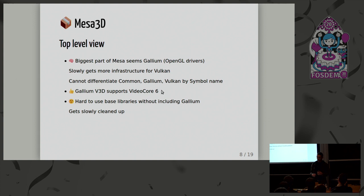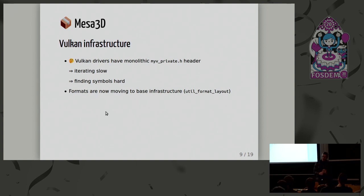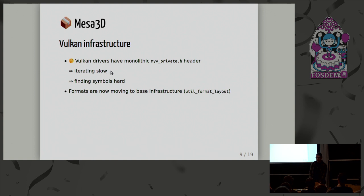Gallium V3D supports VideoCore 6 — Eric made all the necessary changes for basic support, which is really good for me because I can look at the code and try to figure out what it does and port it to Vulkan. Without Gallium it's really hard to get the Vulkan infrastructure out. I noticed Vulkan drivers have a monolithic private header file — I don't know the reason for that, but it's not nice for people like me with a small Haswell CPU who have to recompile the whole driver each time. I have smaller headers instead, and finding symbols in a gigantic header is not fun either.